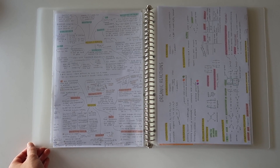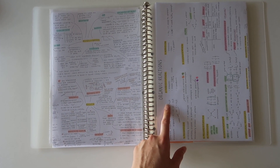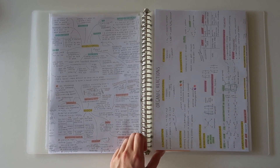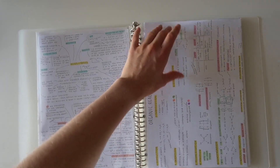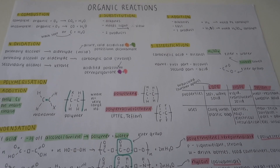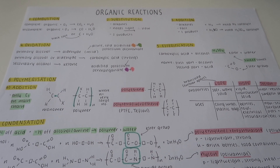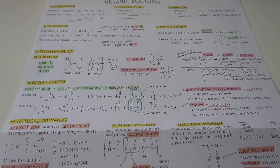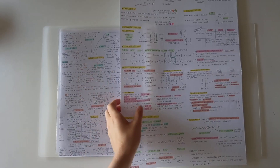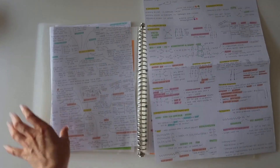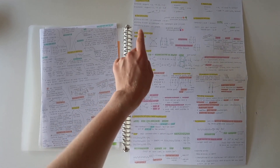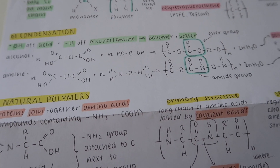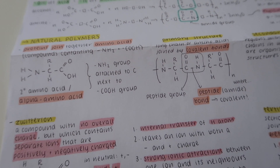The first topic we studied this year was organic chemistry, which was my favorite. Most schools do this topic last but we did it first. Here is my A3 sheet of organic reactions — organic chemistry was the only topic I wasn't able to do a one-page summary mind map for, because there was just so much information. This is my organic reaction sheet with all seven of the different organic reactions we learned about.